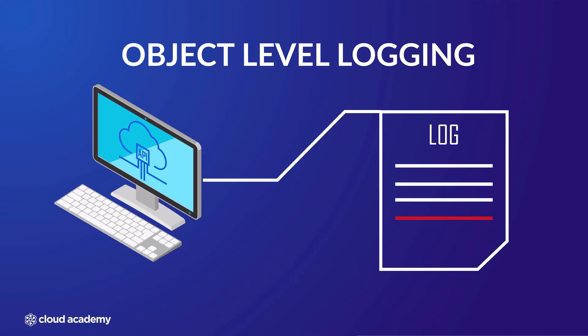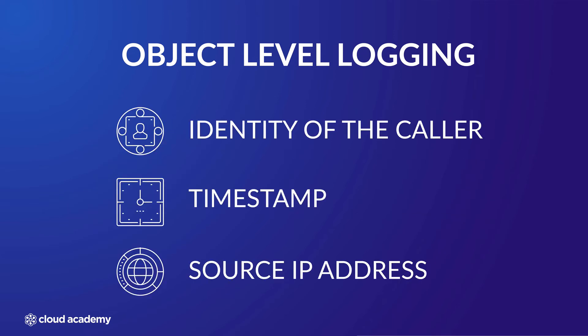Each API call represents a new event within the log file. CloudTrail also records and associates other identifying metadata with all the events, for example the identity of the caller, the timestamp of when the request was initiated, and the source IP address.